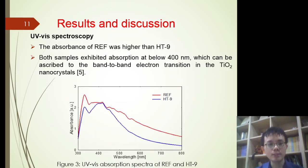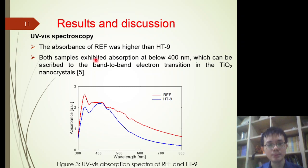Ultraviolet-visible, or UV-Vis, spectroscopy was also performed to investigate the optical properties of the titanium dioxide photoanodes. As shown in Figure 3, the absorbance of the reference was higher than HD9, and both samples exhibited absorption below 400 nanometers, which can be ascribed to the band-to-band electron transitions in the titanium dioxide nanoparticles.